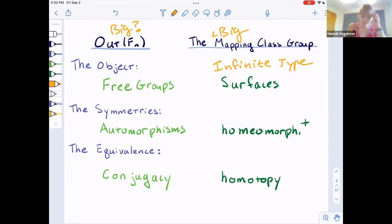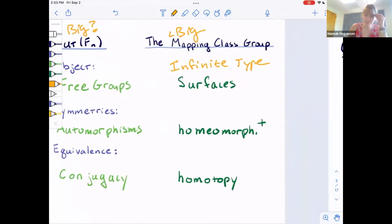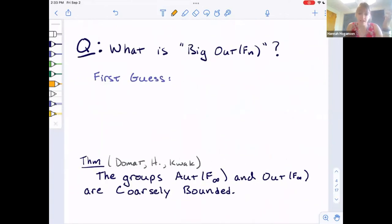My understanding of the story is that people were like, well, what about big out F_n? So you go find Mladen and Yael and you ask them, what's big out F_n? Maybe if you're not them, your first guess as to what big out F_n would be is, how do I take out F_n and make it infinite? Make that n go to infinity? Look at out F infinity. That's like a cool group. It's one group.